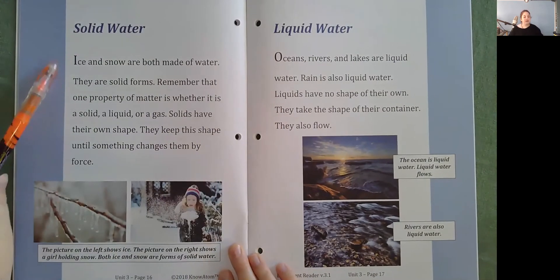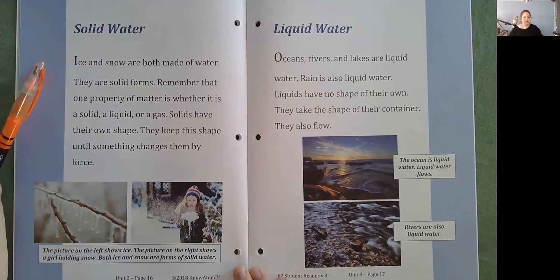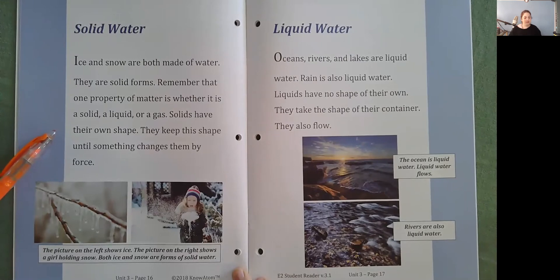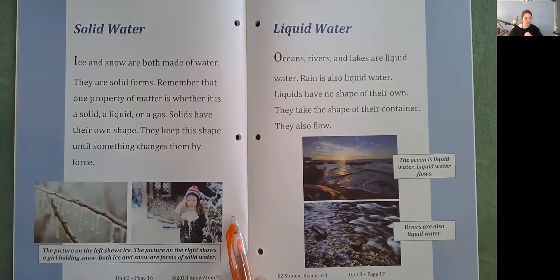Solid water. Ice and snow are both made of water. They are solid forms. Remember that one property of matter is whether it is a solid, a liquid, or a gas. Solids have their own shape. They keep this shape until something changes them by force. The picture on the left shows ice. The picture on the right shows a girl holding snow. Both ice and snow are forms of solid water.